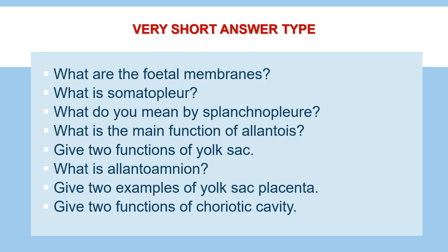The first question of this category is: what are the fetal membranes? Second: what is somatoplure? Next: what do you mean by splanchnoplure? Next: what is the main function of allantois? Next: give two functions of yolk sac. Next: what is allantoamnion? Next: give two examples of yolk sac placenta. And the last question of this category is: give two functions of chorionic cavity.